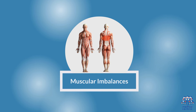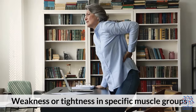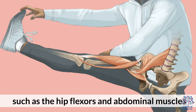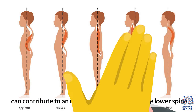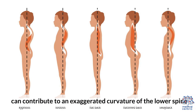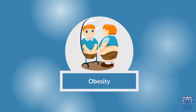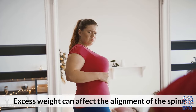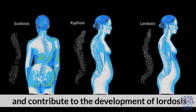3. Muscular Imbalances: Weakness or tightness in specific muscle groups, such as the hip flexors and abdominal muscles, can contribute to an exaggerated curvature of the lower spine. 4. Obesity: Excess weight can affect the alignment of the spine and contribute to the development of lordosis.